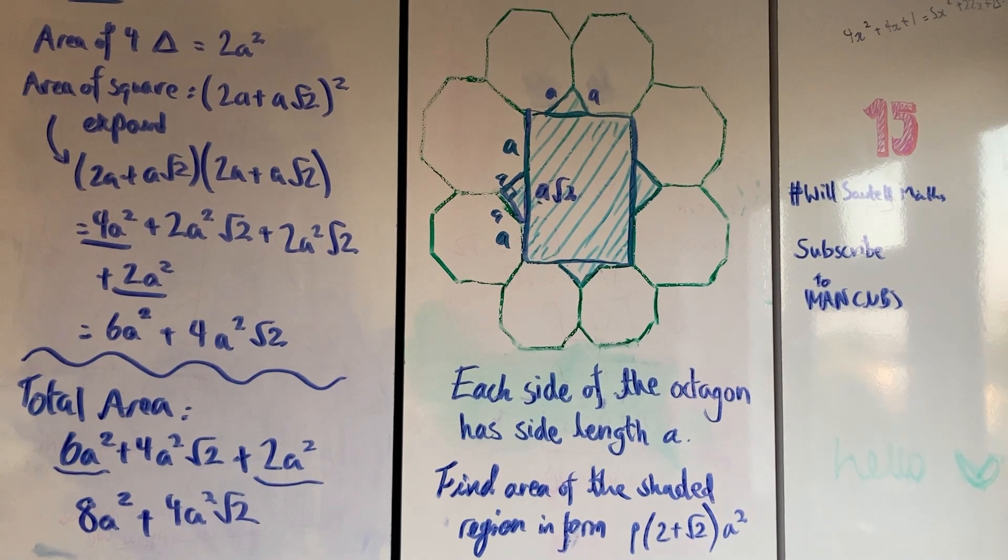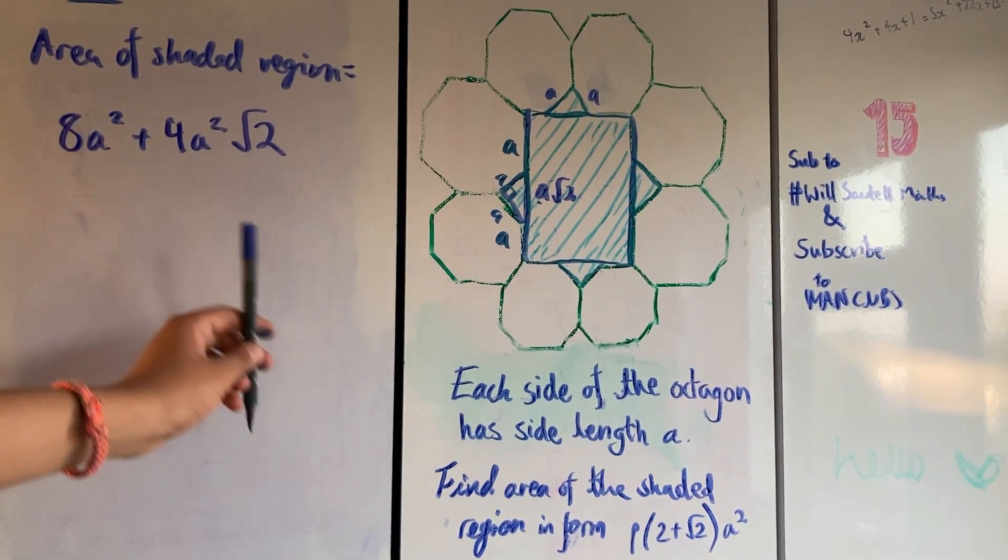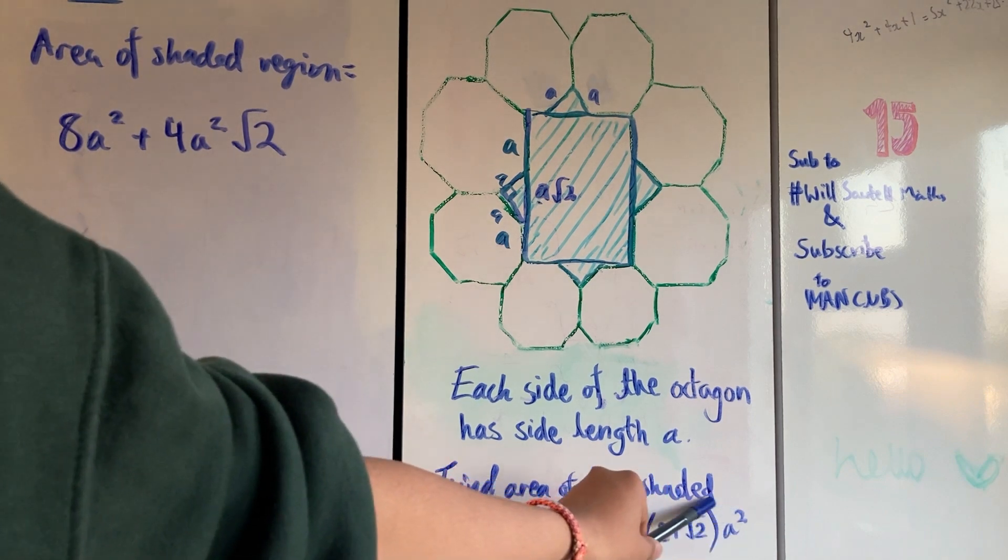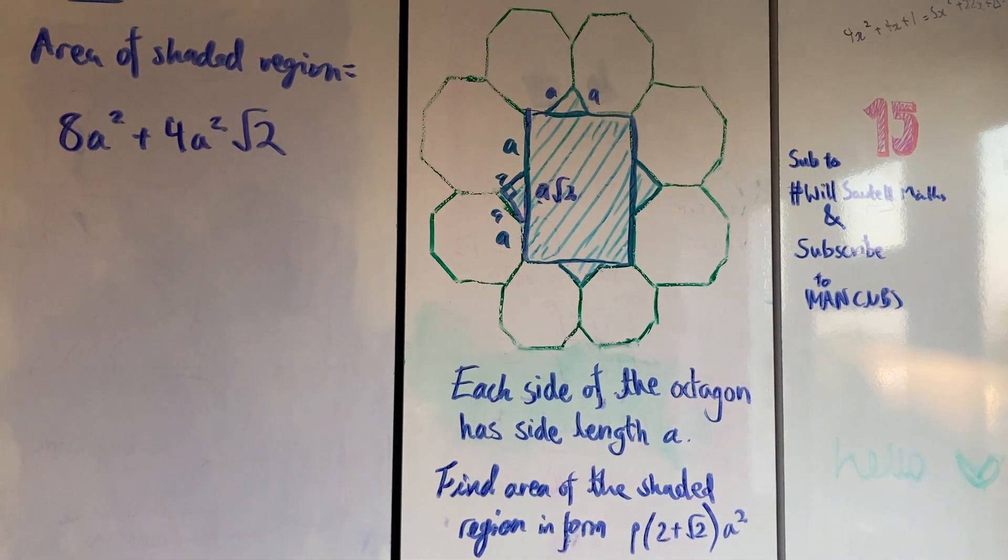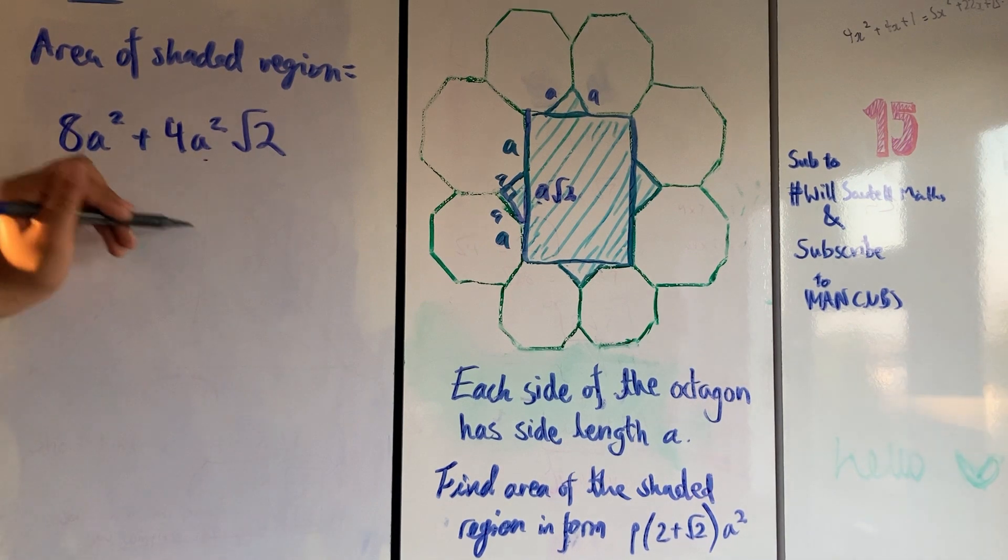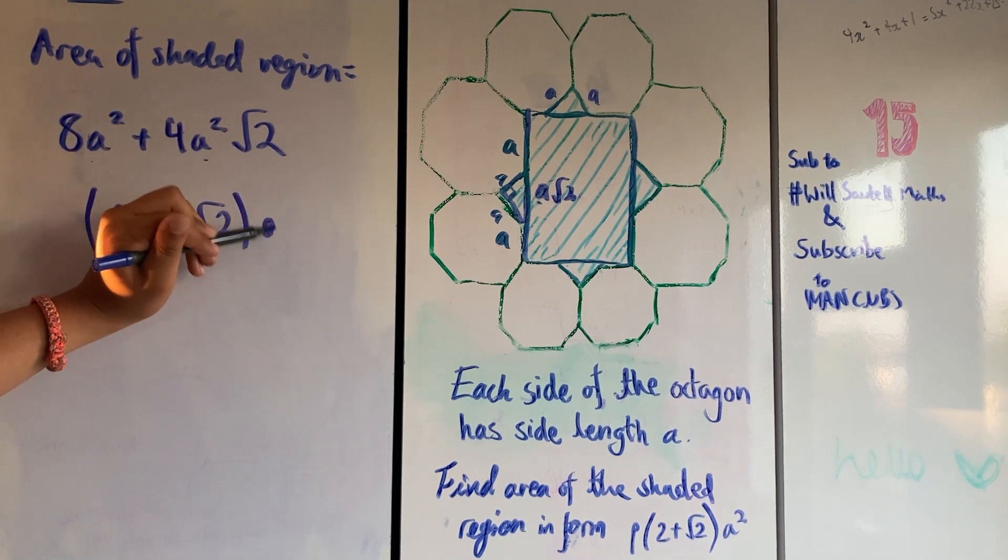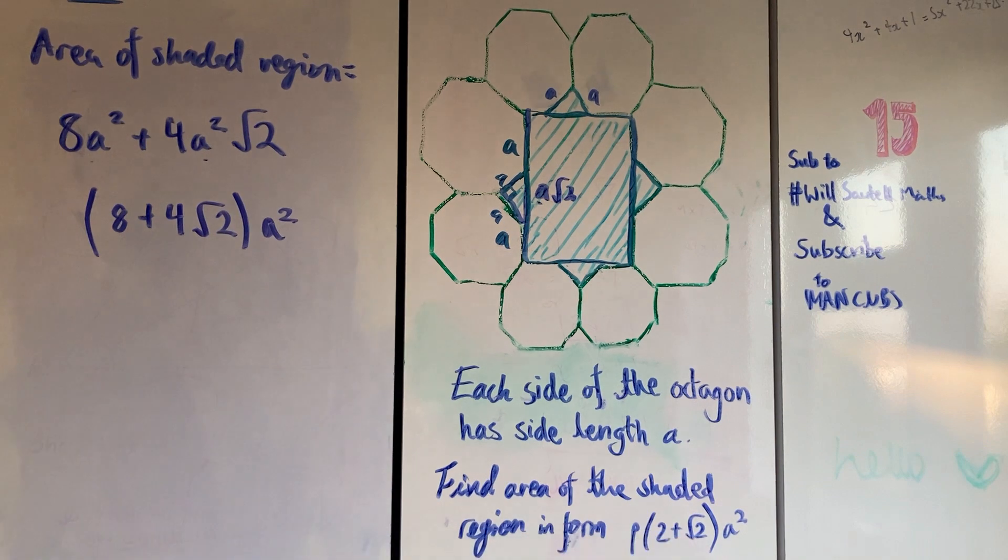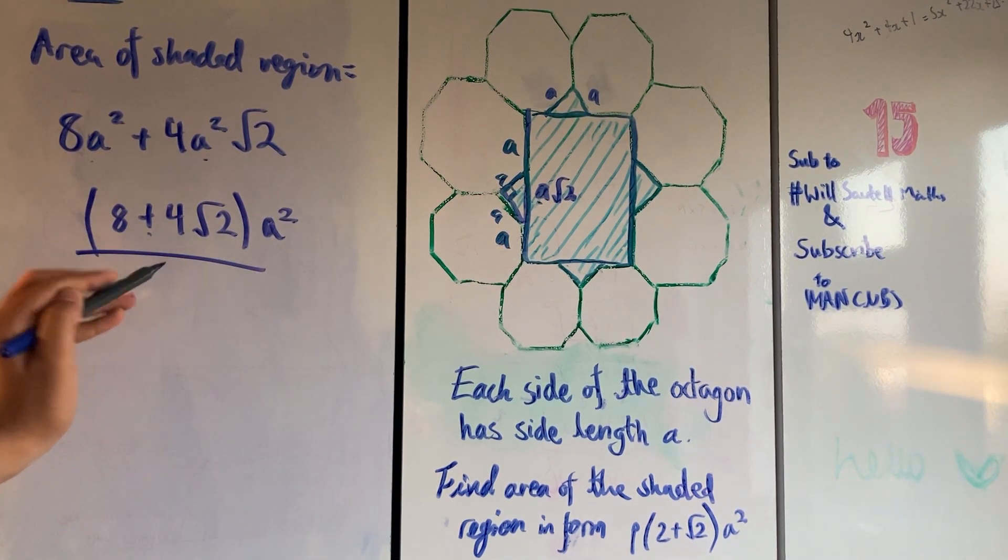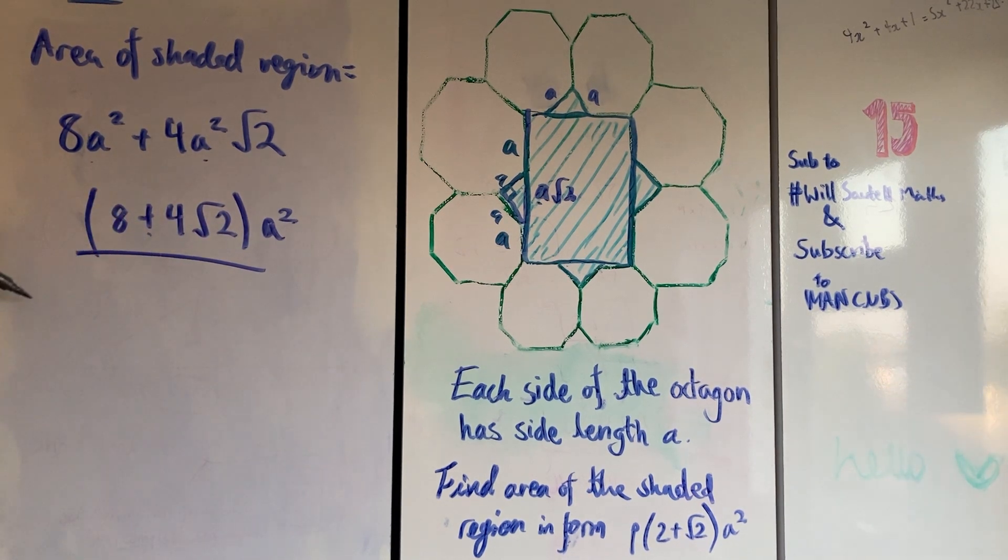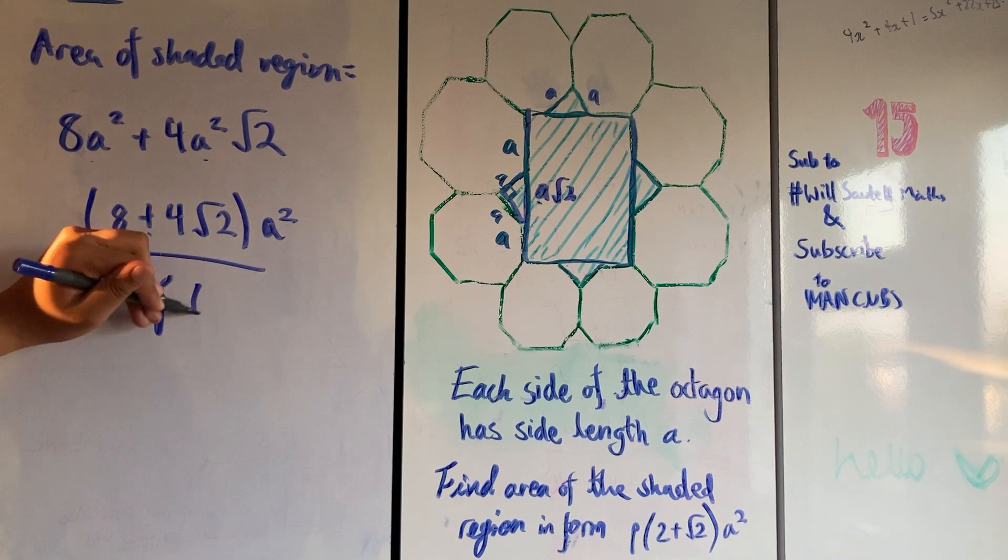But this isn't in the form that we want. We need it in that form. What we're going to do is try and get that form. We see we've got an a² on the outside of the bracket, so maybe we can factorize by a². Look, we've got a² in common on both terms. So I'm putting the rest in the brackets: 4√2 + 8, and the a² on the outside. I'm putting it on the right because that's how it's written in the question. But look, we've got 8 + 4√2 in our brackets. We need 2 + √2. So we can factorize by 4. Factor of 4 is common in 8 and 4√2.